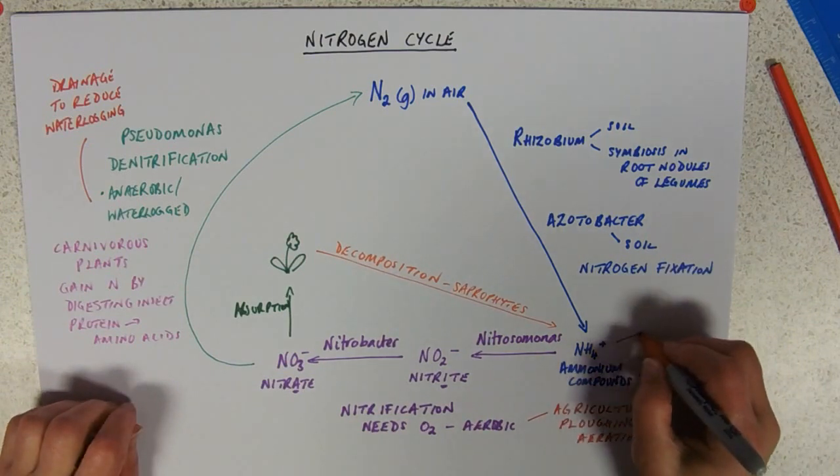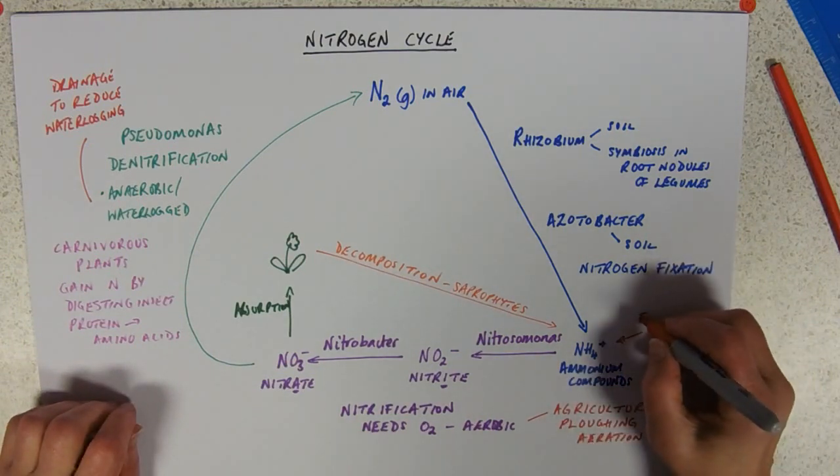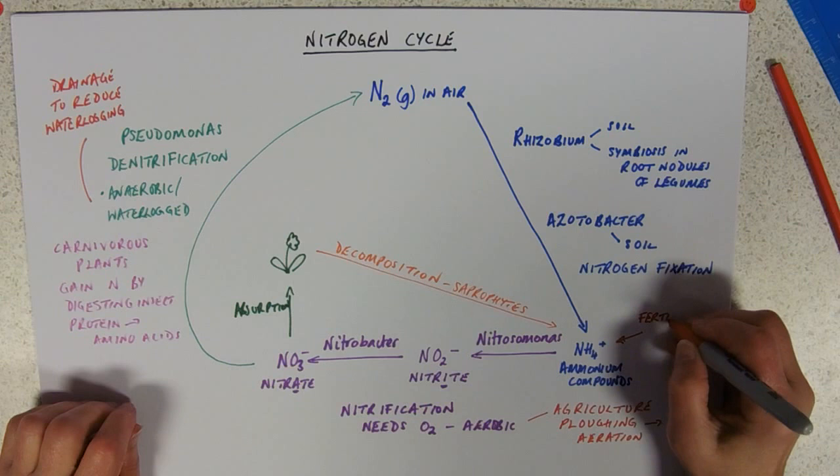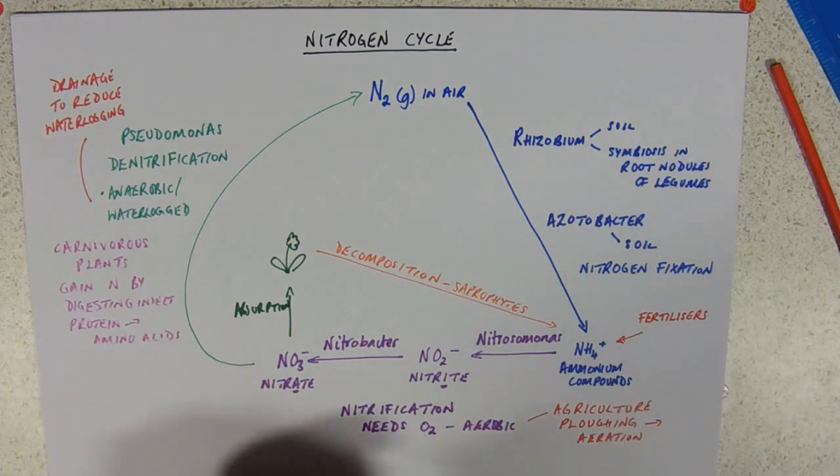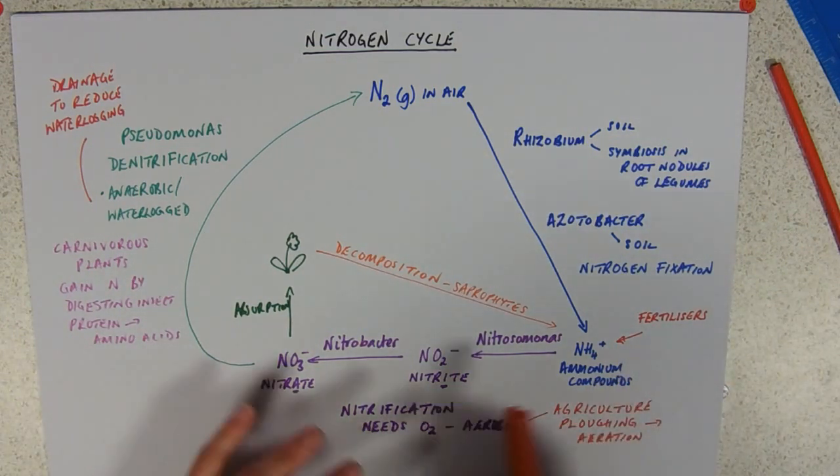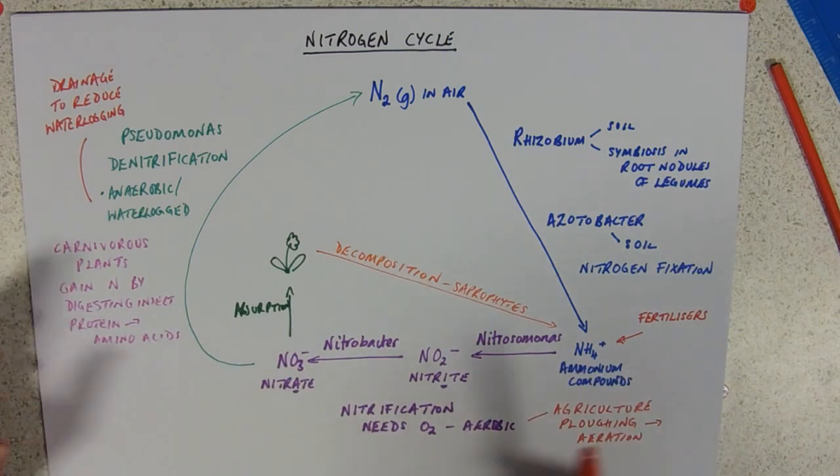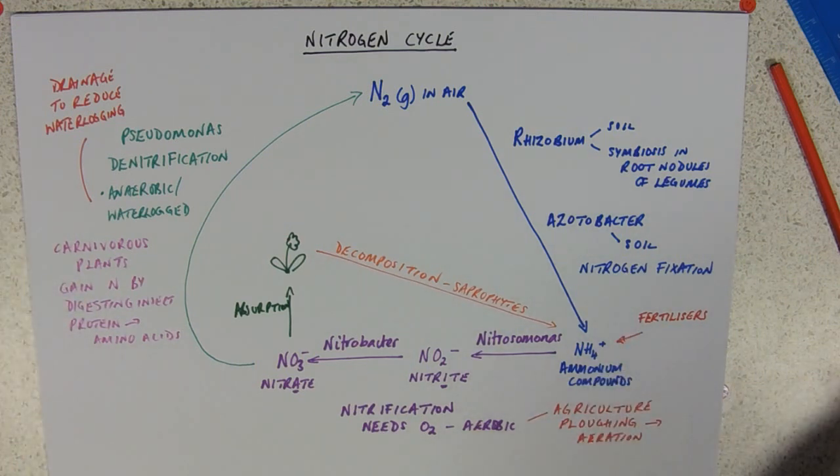And, of course, we're talking about using fertilisers. Remember our NPK fertilisers. You've got to put more ammonium compounds in. And then, if you've got nice aerobic conditions, then they'll convert it happily to nitrate. And, in fact, some plants can use ammonium compounds.